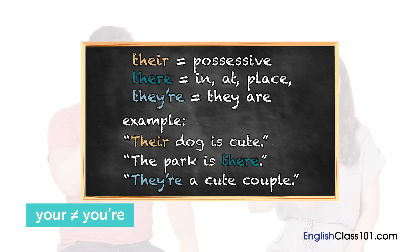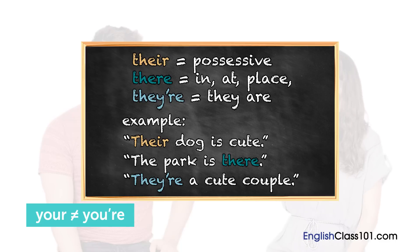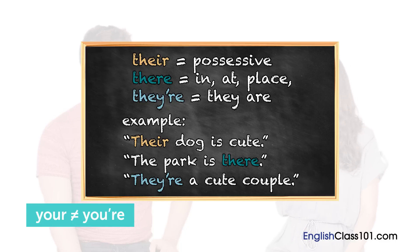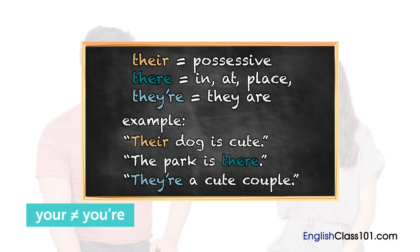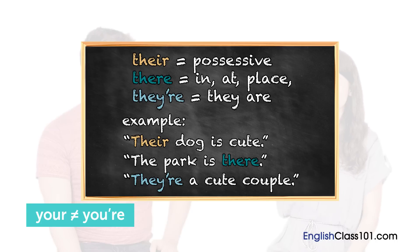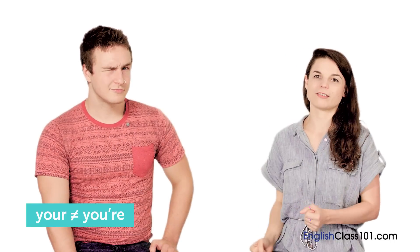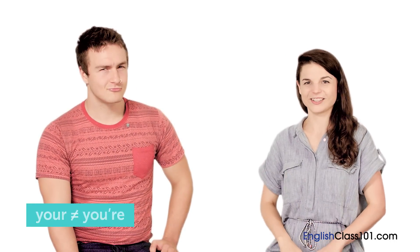That and 'there.' We talked about this earlier — the three versions: T-H-E-I-R, the possessive, as in 'that's their house'; T-H-E-R-E, as in 'it's over there'; and T-H-E-Y apostrophe R-E, meaning 'they are.' There are three different 'theres' that sound the same but have different meanings and should be spelled differently. So come on, native speakers — get it together.